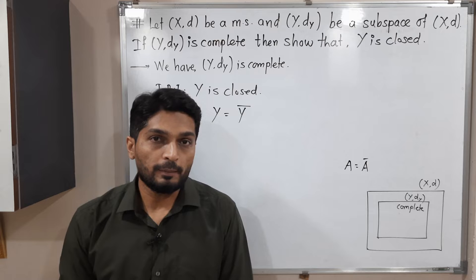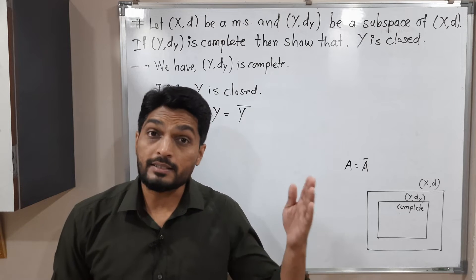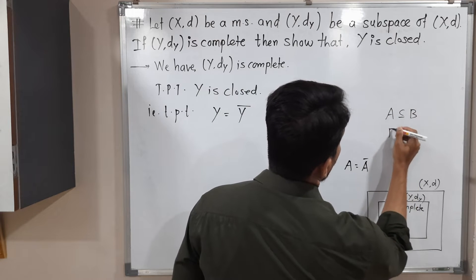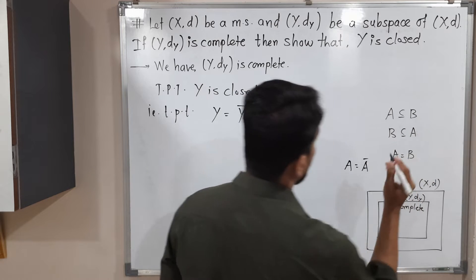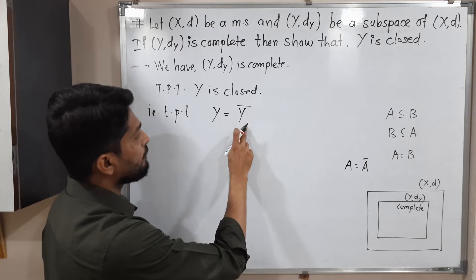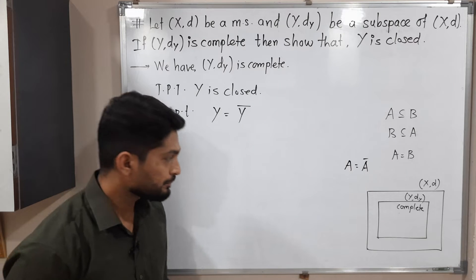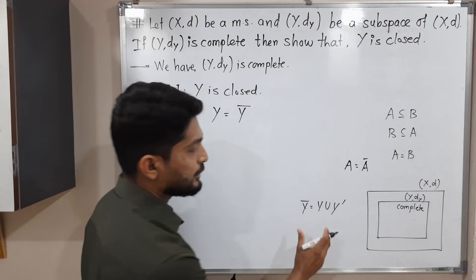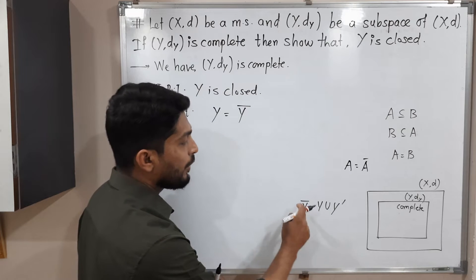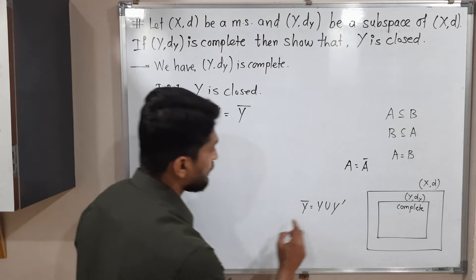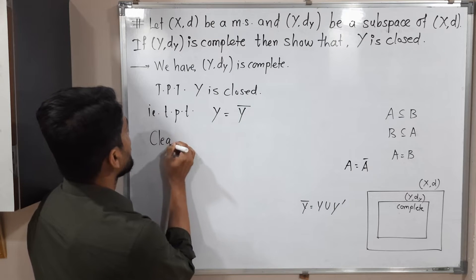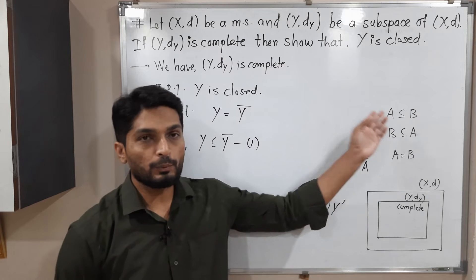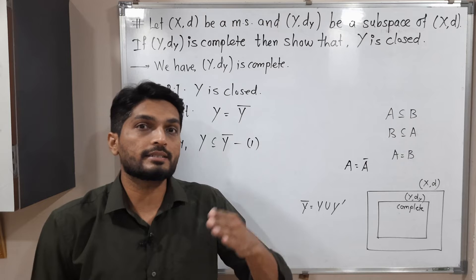So tell me how to prove two sets are equal: the first set is a subset of the second and the second set is a subset of the first. If A is a subset of B and B is a subset of A, then we say A equals B. In the same way, I will prove Y is a subset of Y-bar and Y-bar is a subset of Y. But see, what is the definition of Y-bar? Y-bar means Y union Y-dash. So this is the definition of closure. That means obviously Y is a subset of Y-bar, since it is a part of it. So clearly, Y is a subset of Y-bar. So that means the first half is done.